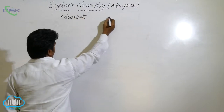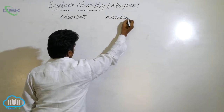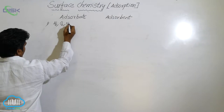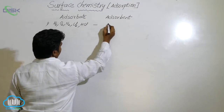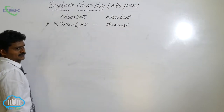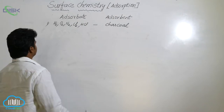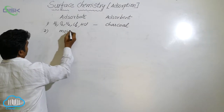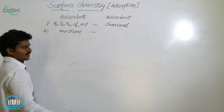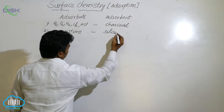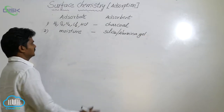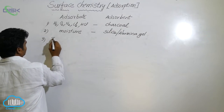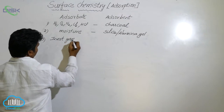For gases like H₂, O₂, N₂, Cl₂, HCl, activated charcoal acts as the adsorbent — charcoal is an amorphous form of carbon. Second, for moisture in air, silica gel or alumina gel acts as the adsorbent.